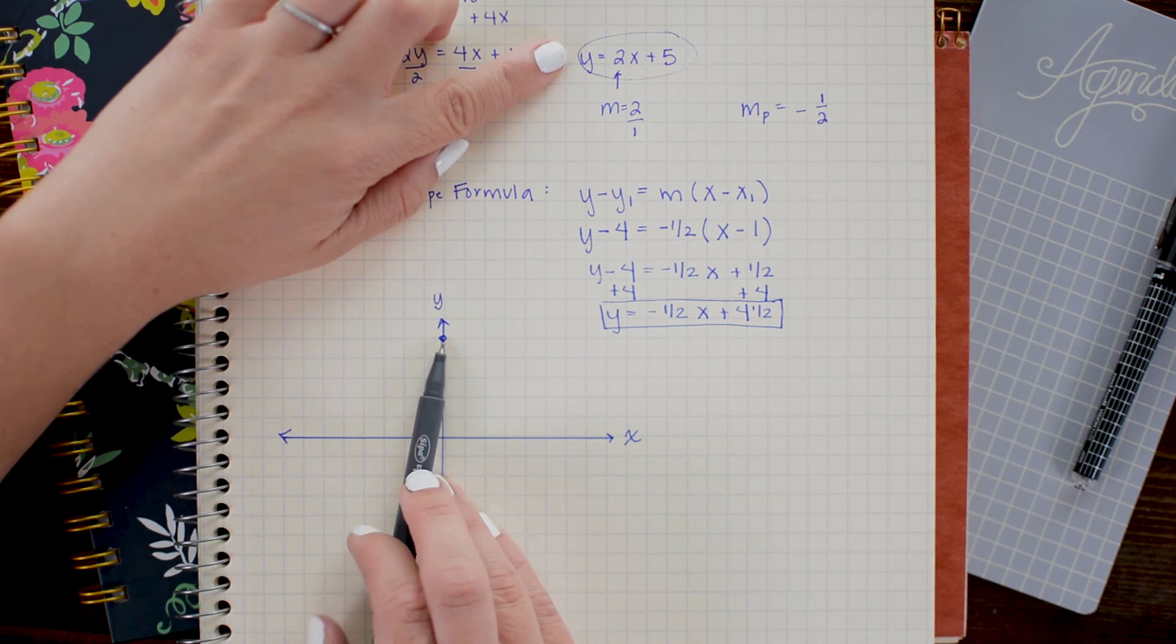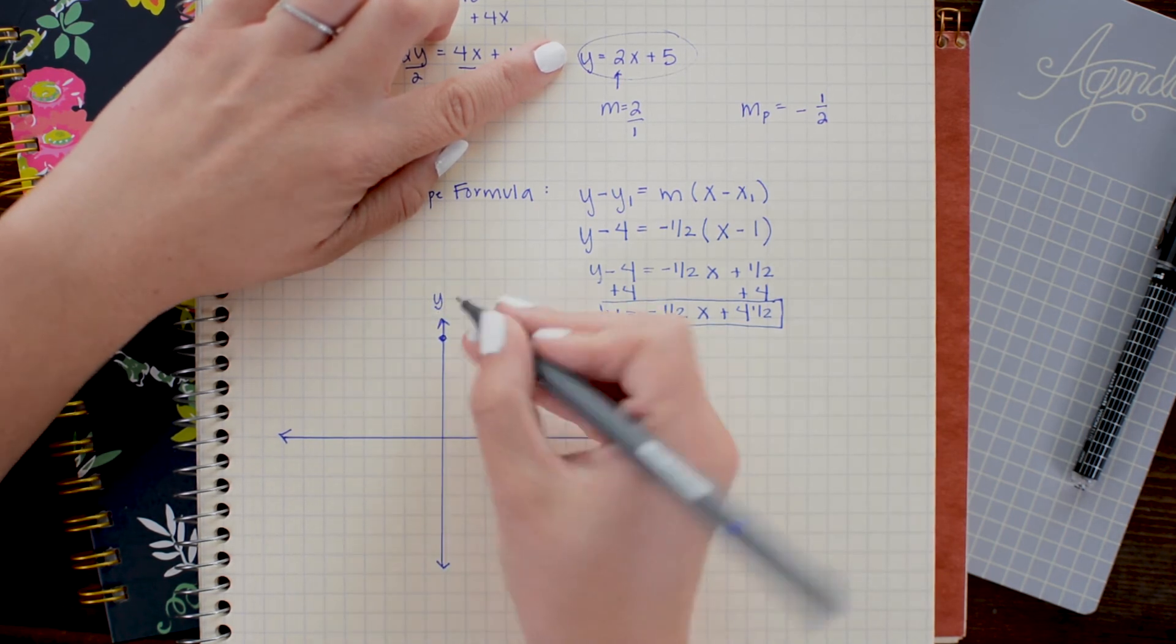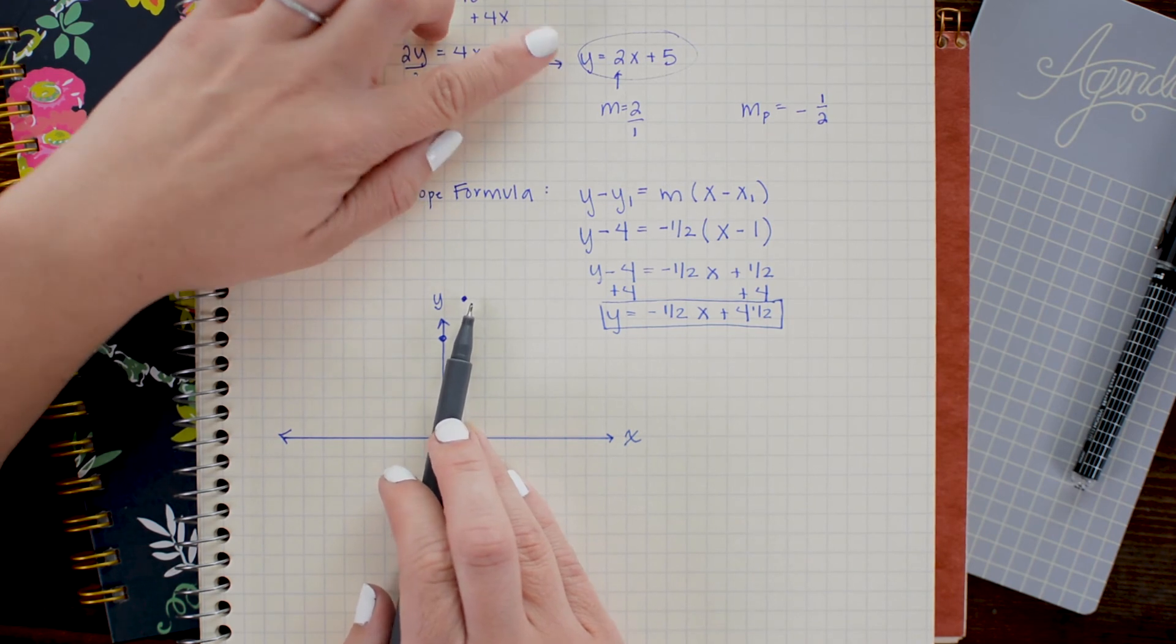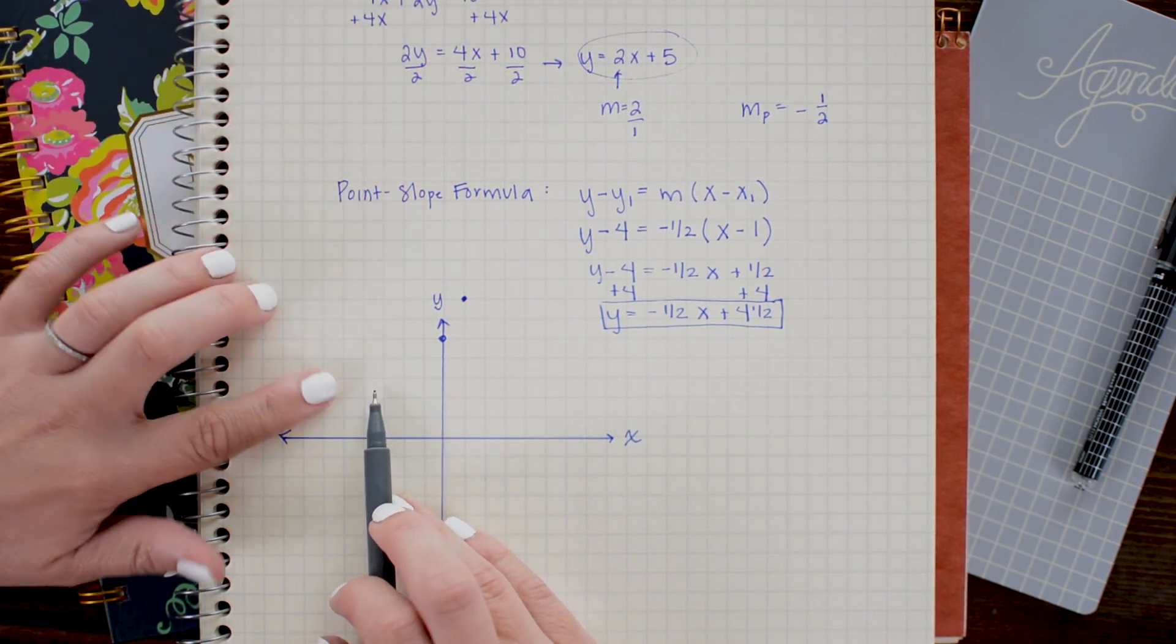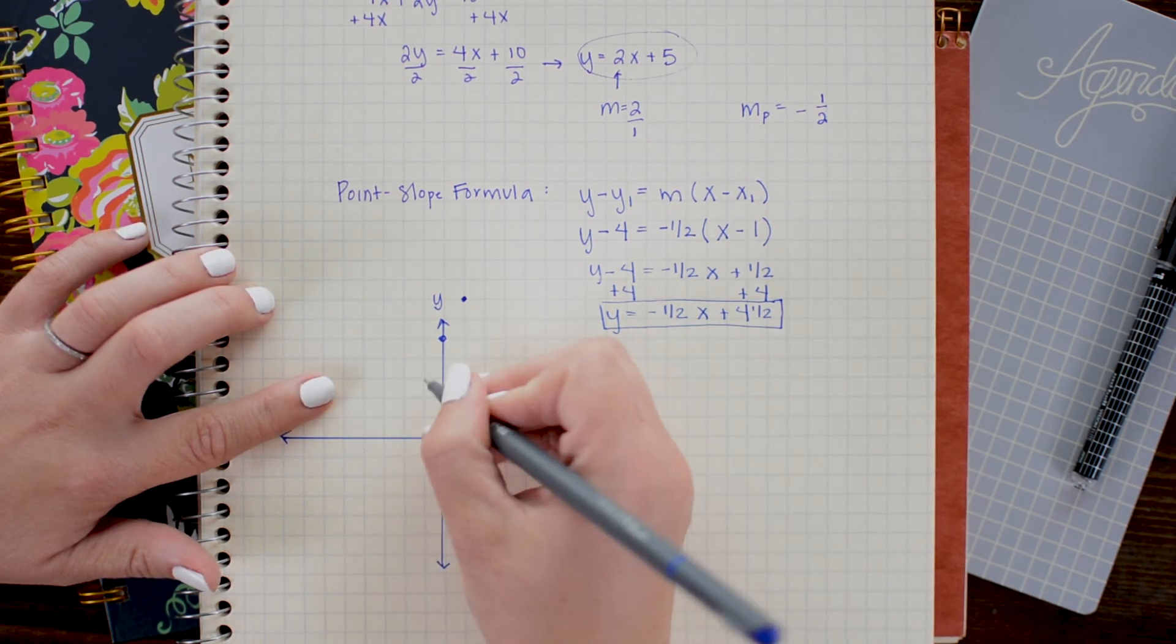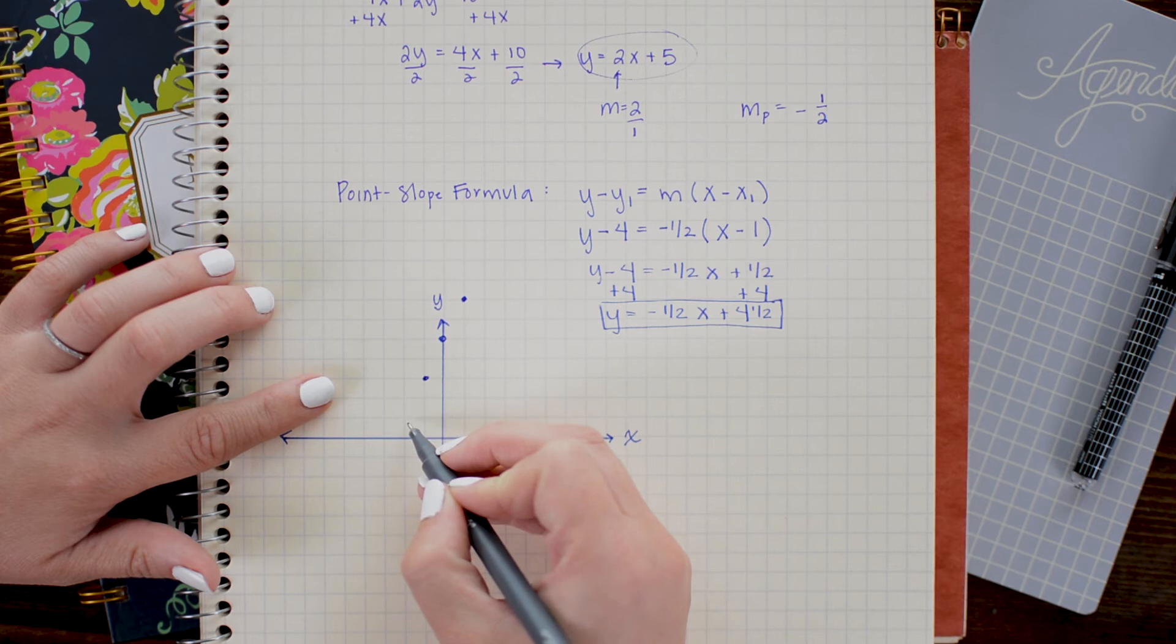So from this point, I can go up 2 and right 1. I'm running out of room here, so what I'm going to do is the exact opposite to fill in a couple more points. I'm going to go down 2 and left 1, and that will give me more points on the plane.